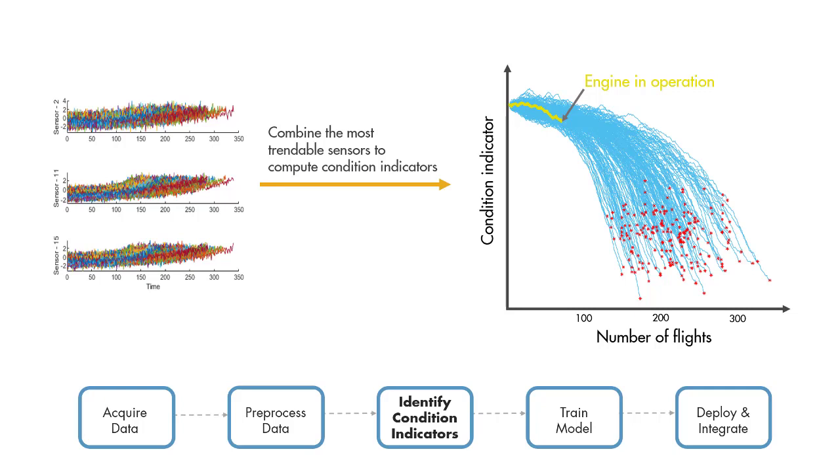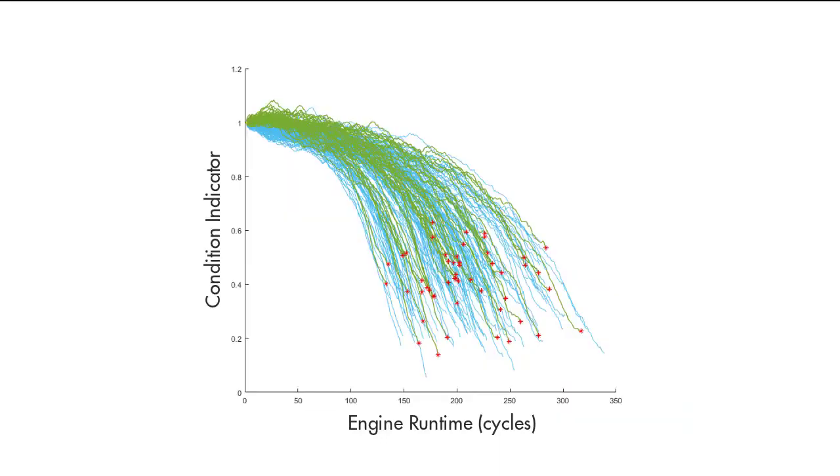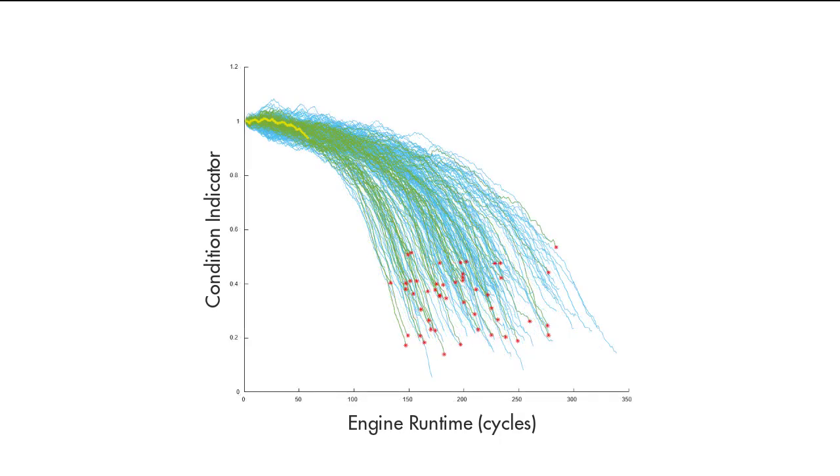Now that we have the degradation profiles of all the engines, the next step is to train a similarity model using these trajectories and estimate the remaining useful life of our engine. This animation shows us how this training is performed. Let's pause this for a second to discuss what different colors mean.